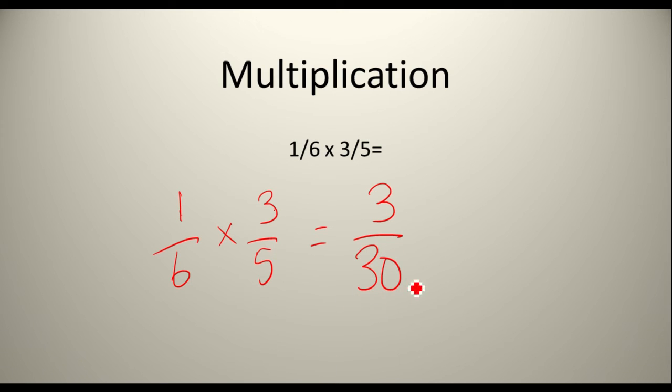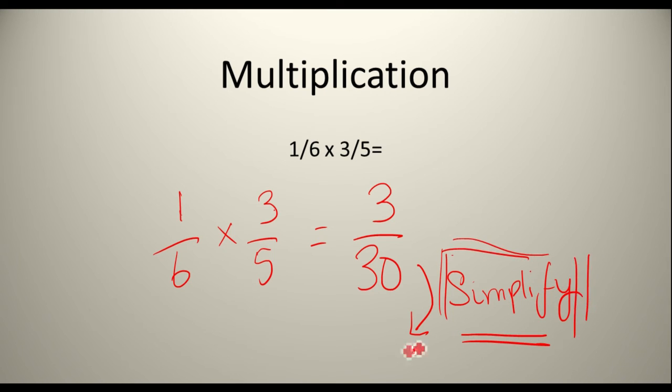Now, to get full marks, you have to simplify. Simplify will get you the full marks. If it doesn't say simplify, then you don't have to do it. So, what you have to do is do three. How many threes can go into 30? You guessed it, it's 10. And how many threes can go into three? One.